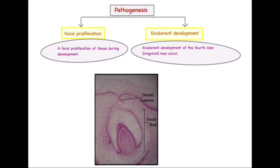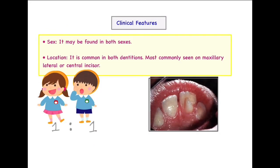Regarding exuberant development: as we know, the cingulum develops from three lobes, but in some cases there might be four lobes present. In such a case, there would obviously be a hyperplasia in the cingulum area, referred to as exuberant development — because not three but four lobes are present. Because of this excessive lobe, there is development of Talon's Cusp. There is no gender predilection; the ratio is 1:1, occurring equally in both sexes.